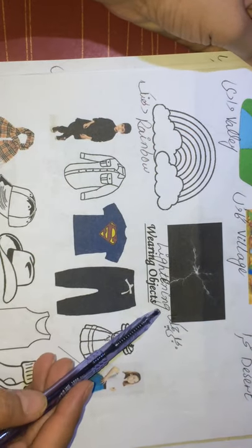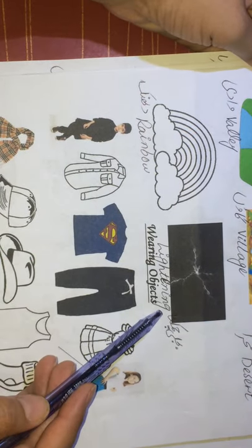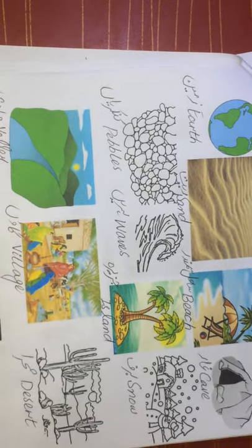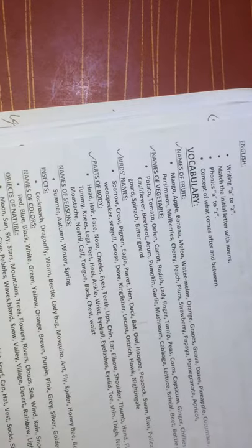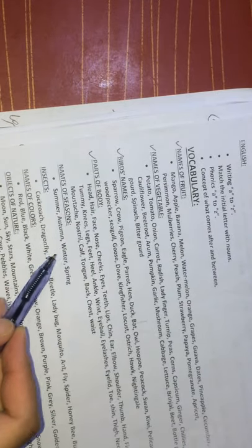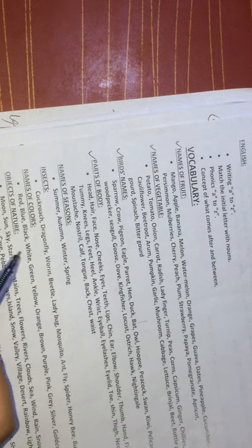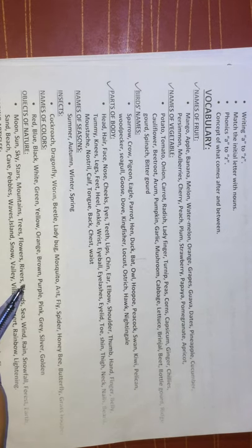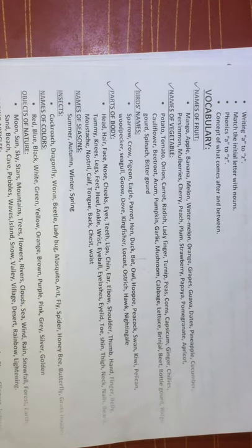Rainbow (dhanak), lightning (bejli ka chamakna). We have finished our insects names, seasons names, and objects of nature. Today we have covered the area of seasons, insects, objects of nature, and colors name. Inshallah, we will discuss in our next video wearing articles and animals name. Keep watching, goodbye.